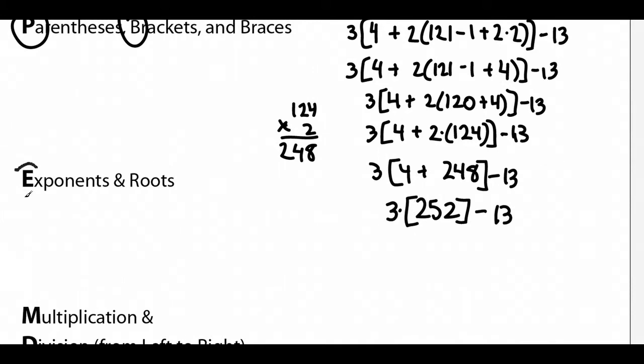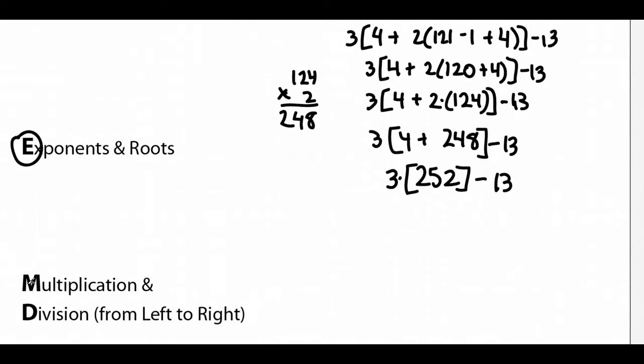So now we come here. We don't have any exponents now, but we have multiplication and division. And so we take 252 and we multiply it by 3. So just a little side work. So we have 6.